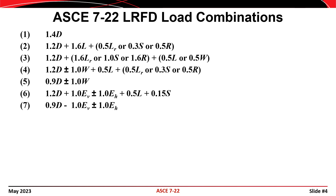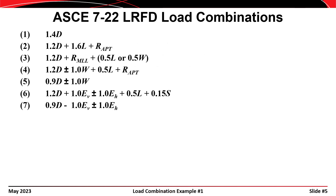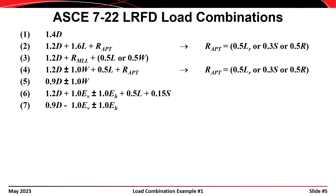One of the first things we'll do is modify these combinations to include a roof loading taken as the maximum of the roof live load, snow load, and rain load. When we make that modification, the load combinations look like this. We'll then rewrite these combinations with an R in place of the roof loading. In combinations 2 and 4, I'm using R sub APT to represent the roof loading at its arbitrary point in time level, and in combination 3, I'm using R sub MLL to represent the roof loading at its maximum lifetime level.